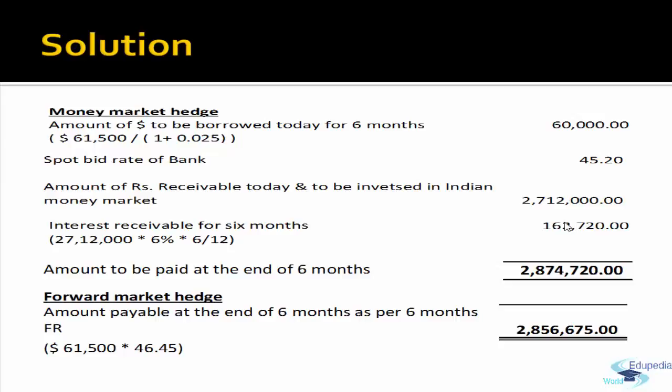If the exporter had gone for a forward market hedge instead, the amount receivable after six months would be USD 61,500 × 46.45 (bid forward rate) = INR 28,56,675. Comparing both options, the gross amount receivable under money market hedge (INR 28,74,720) is more than under forward market hedge (INR 28,56,675), so the exporter should go for money market hedge.